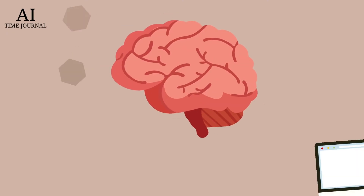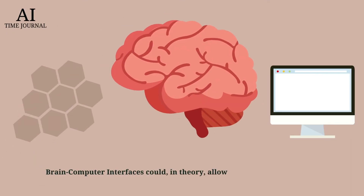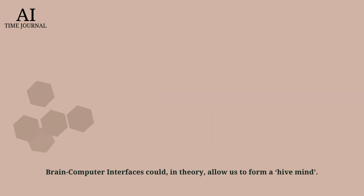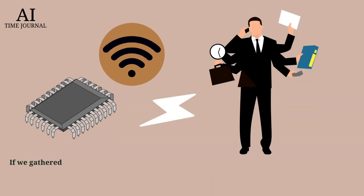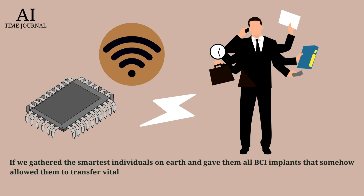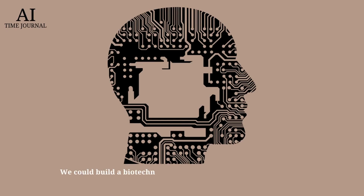Path 4: Cyborgization. Brain-computer interfaces could, in theory, allow us to form a hive mind. If we gathered the smartest individuals on earth and gave them all BCI implants that somehow allowed them to transfer their vital skills and knowledge to each other via wireless communication, we could build a biotechnological conglomerate superintelligence.